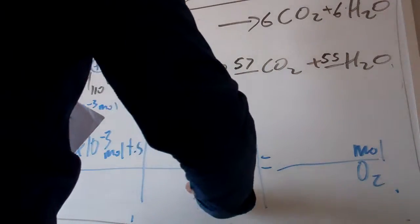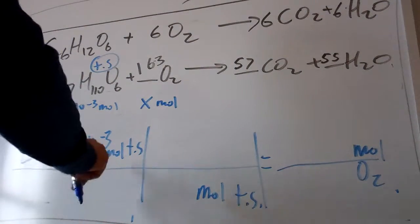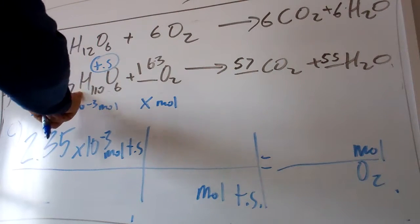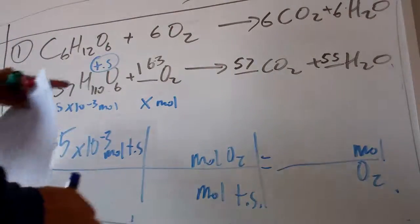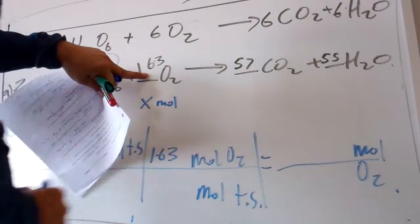...then the units down here have to be moles of tristerine. And how do you know it's tristerine? Well, it's in the question somewhere. We're starting with moles of tristerine, and we're trying to get to moles of O2. Now here's the important part: what's the ratio, what's the number in front? 163 moles of O2 for every 2 moles of tristerine.